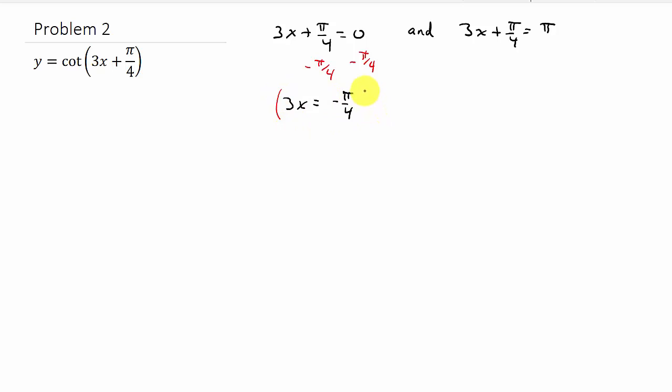And then we will divide, I'm sorry, well you can divide by 3, or the same thing would be multiplying by a third. That cancels the 3 out here. And so that's going to leave me with x equals negative π over 12.